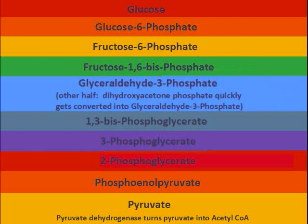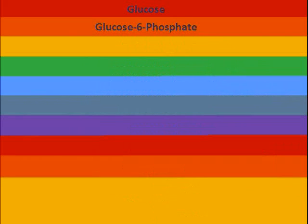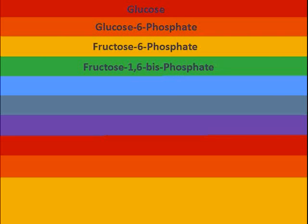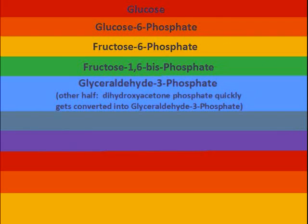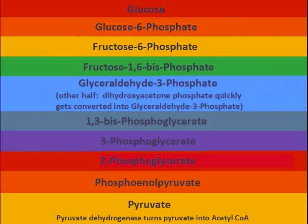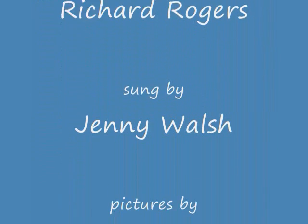When you know the steps to take, glucose turns to pyruvate. First glucose, glucose-6-phosphate, then fructose-6-phosphate, fructose-1,6-bisphosphate, glyceraldehyde-3-phosphate, 1,3-bisphosphoglycerate, then 3-phosphoglycerate, next 2-phosphoglycerate, phosphoenolpyruvate — and now you know glycolysis. Good luck!